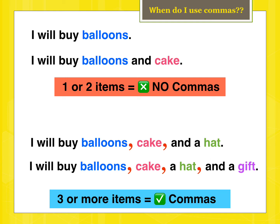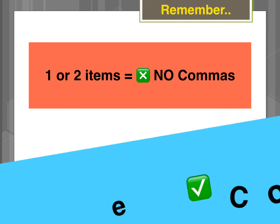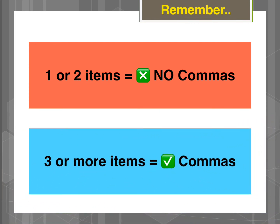So, remember: three or more items — yes, use commas. When you write your list, if one or two items, no need for commas. But if three or more items, we will add commas after each item.